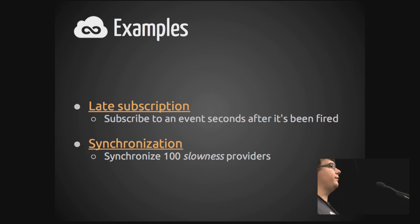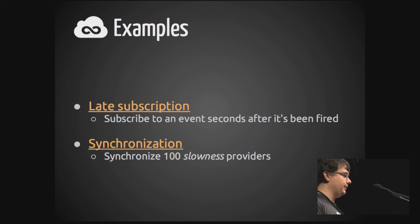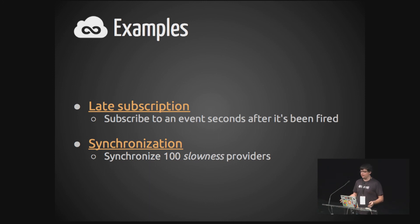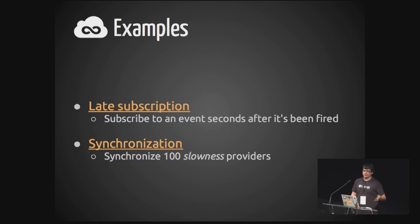I prepared two examples but we don't have time to show them, so I invite you to download the talk and just fiddle with them. They are JS fiddles, so you will be able to modify parameters and stuff. The first one is like subscribing to an event that has been fired seconds ago, and the second is like having a hundred different providers doing slow things, and then you are able to see which are the 10 providers that are successful and stuff like that.